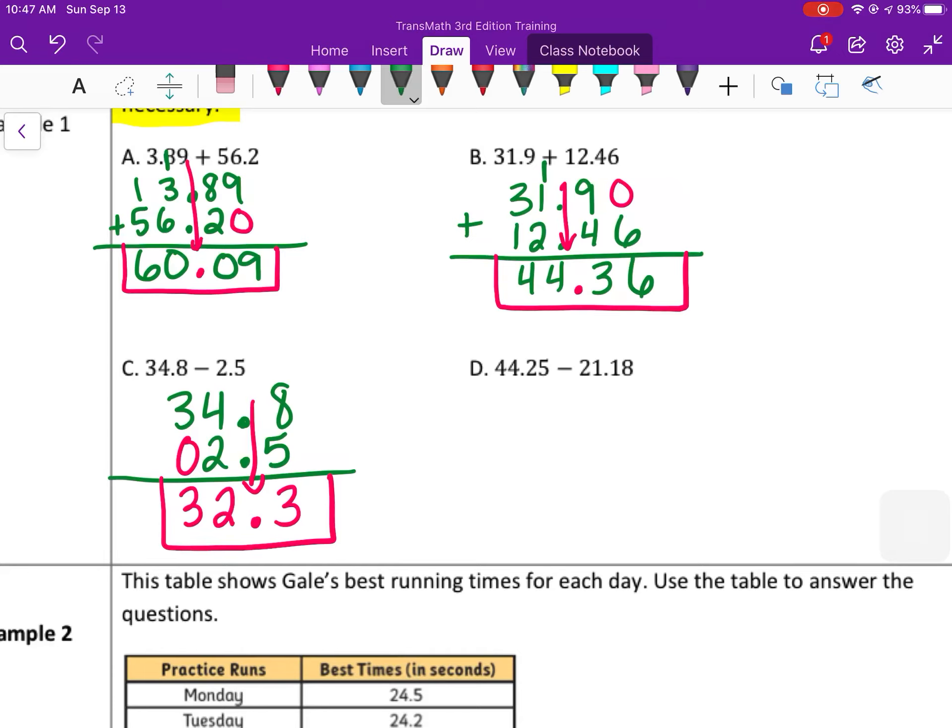Then this one, so lining up the decimals. 44.25, 21.18. Subtracting, this time we start from the right. We have 5 take away 8. Since 8 is bigger than 5, we will need to borrow. You borrow from the 1 next to it. So the 2 is going to turn into a 1 and the 5 will turn into a 15. Then 15 take away 8 is 7. 1 take away 1 is 0. 4 take away 1 is 3. 4 take away 2 is 2. Bring the decimal point down.